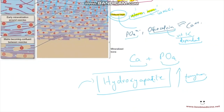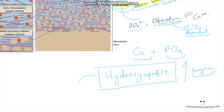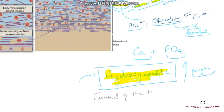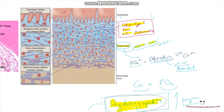The part of our body with the greatest hydroxyapatite content — and therefore the hardest — is the enamel of the tooth. Tooth enamel has around 95% hydroxyapatite content, giving it the nature of being the toughest bone-like structure of our body.